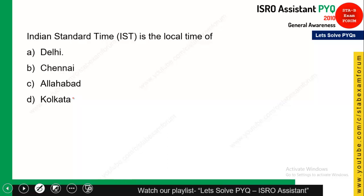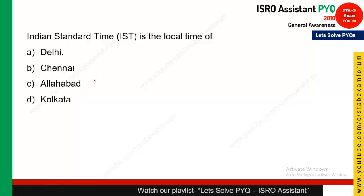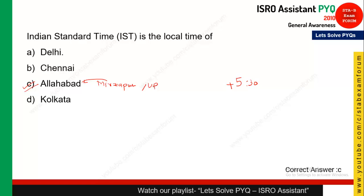There is one international standard time and the other is Indian Standard Time. With respect to international standard time, we are plus five hours thirty minutes. Indian Standard Time is the local time of which city? You should remember it is Mirzapur, Allahabad. There is a city called Mirzapur in UP which is near Allahabad, and that represents the local time as Indian Standard Time. So Mirzapur, Allahabad, UP is the correct answer.